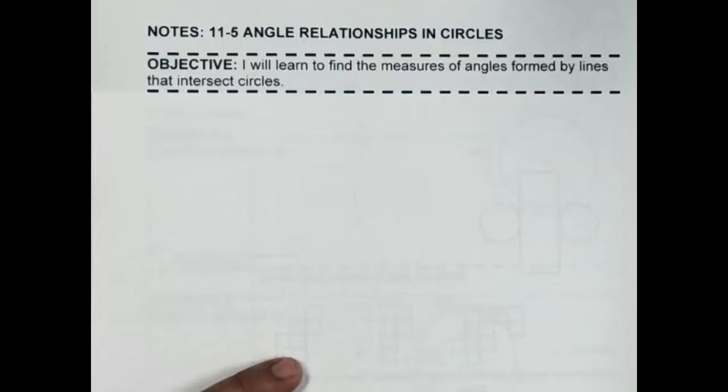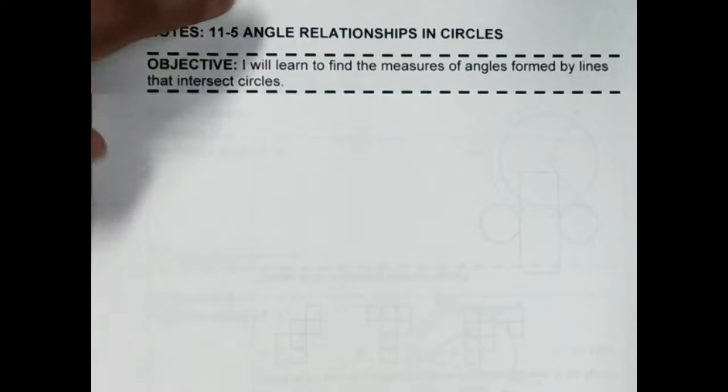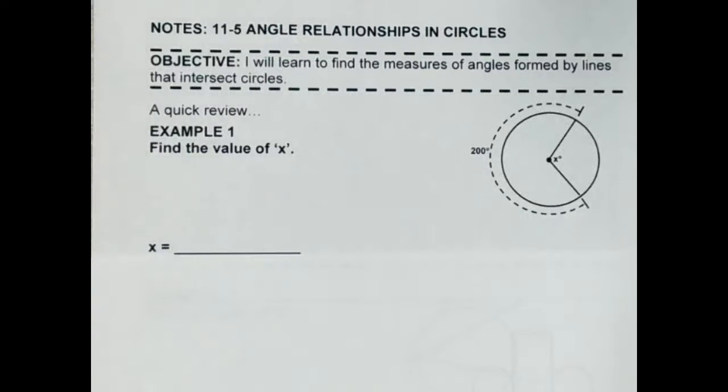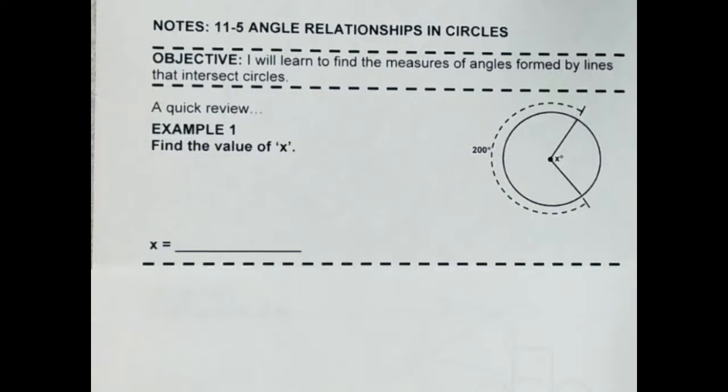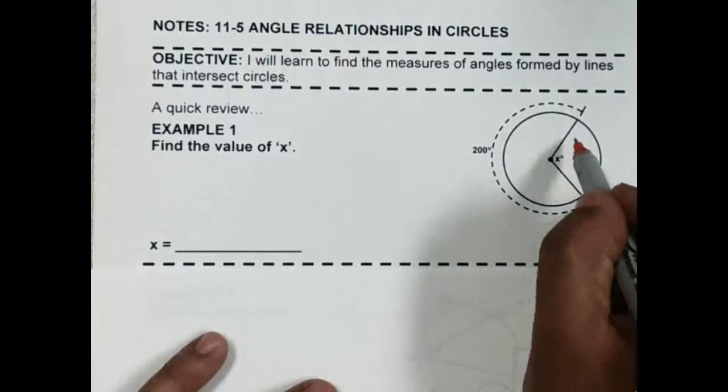Okay, 11.5, angle relationships on circles. We're going to learn to find the measure of angles formed by lines that intersect circles. Before we do that, we're going to do a quick review question. We want to find the value of this angle, x, right here.